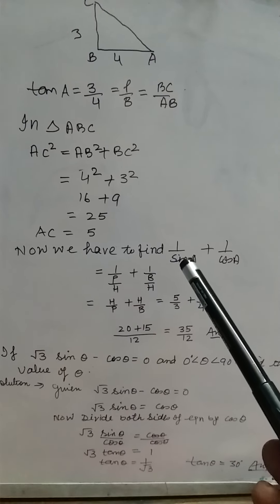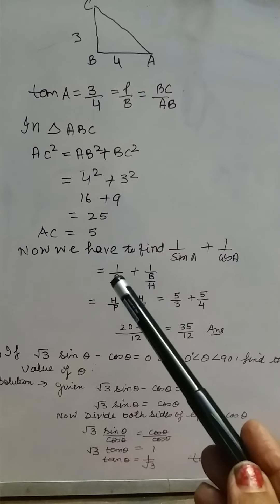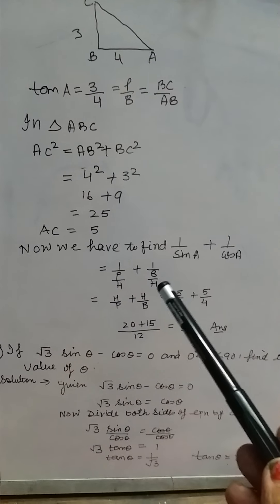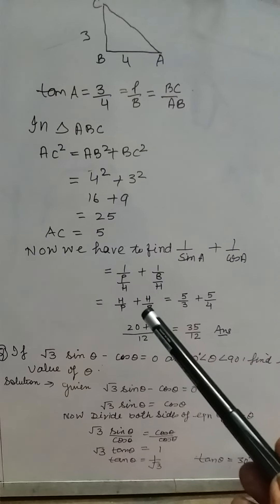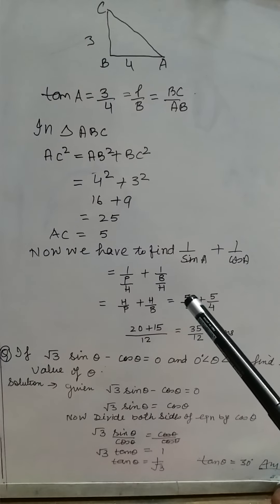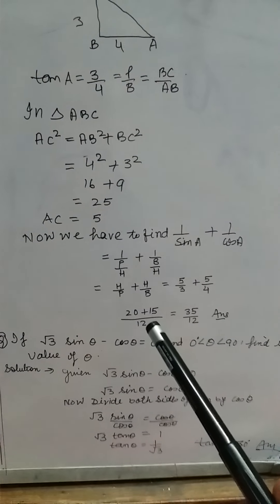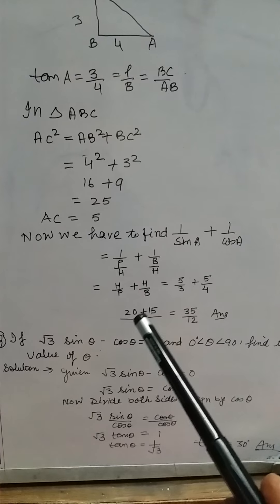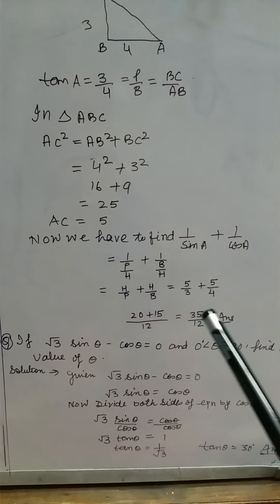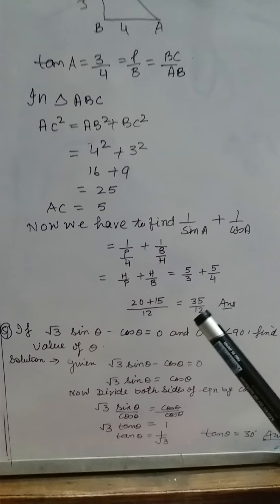Now we find 1 upon sin A plus 1 upon cos A. Since sin A equals p by h, then 1 upon sin A equals h upon p. And cos A equals b by h, so 1 upon cos A equals h upon b. This gives h upon p plus h upon b, which equals 5 by 3 plus 5 by 4. Taking LCM of 12 and solving: 20 plus 15 equals 35 by 12. So the answer is 35 by 12.